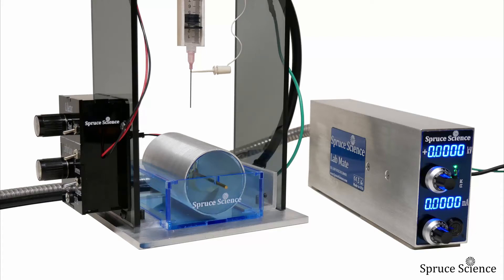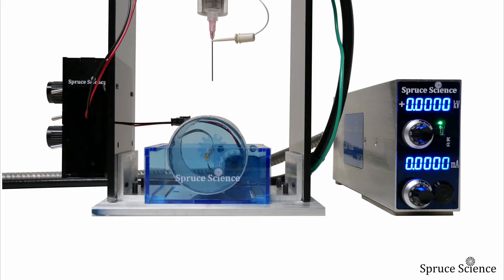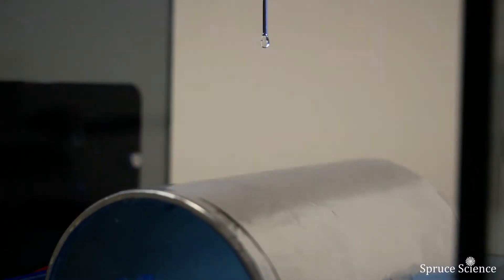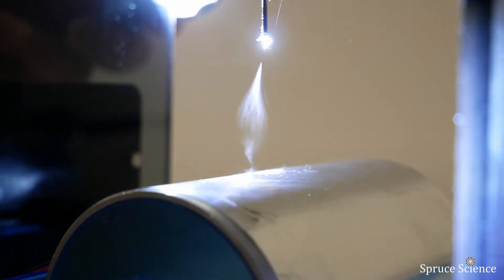Electrospinning is the method of using high voltage to produce ultra small diameter fibers. In the electrospinning process, a polymer solution is held inside a syringe needle pump.